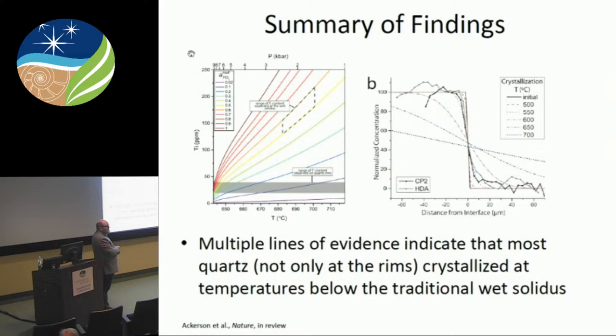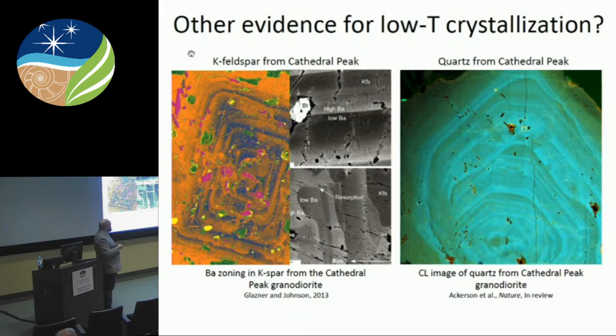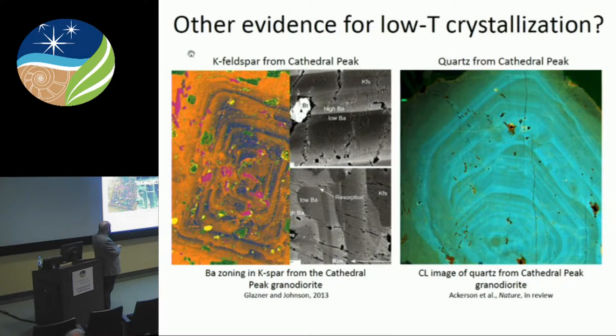To summarize the titanium-in-quartz results: multiple independent lines of evidence demonstrate that almost all the quartz crystallized at temperatures below where we thought possible for granitic rocks since Tuttle and Bowen. This raises the question: could all this quartz data be wrong? Are there other indicators of low temperature in the mineral assemblages? This is the barium zoning in potassium feldspars from the Cathedral Peak Granodiorite, and this is the CL zoning on the quartz crystals. These textures are very similar — resorption and recrystallization throughout the entirety of these feldspar megacrysts, same patterns in the quartz — and they're texturally almost identical, from the same exact hand sample.